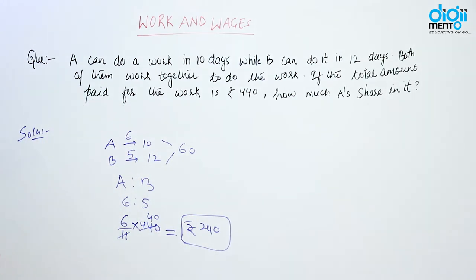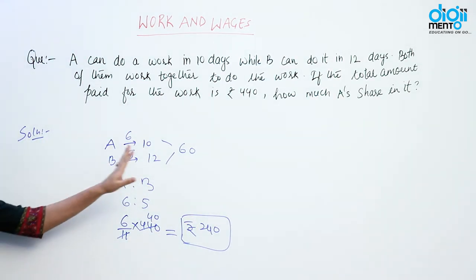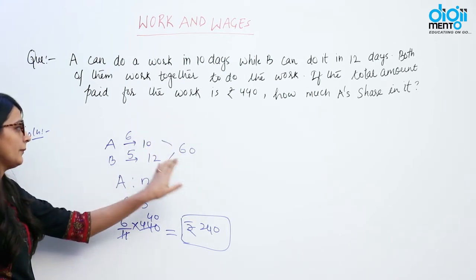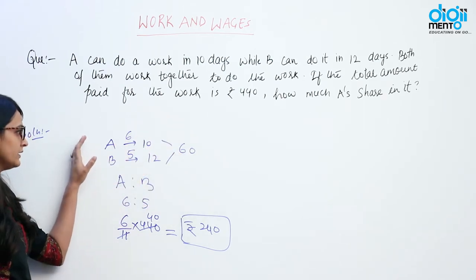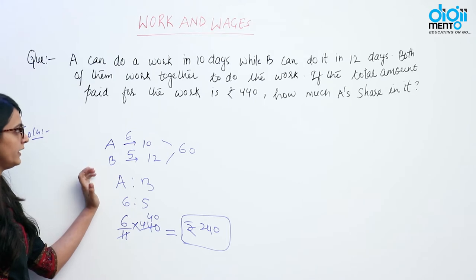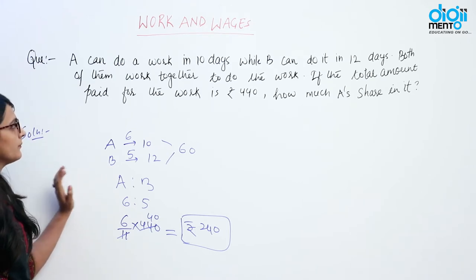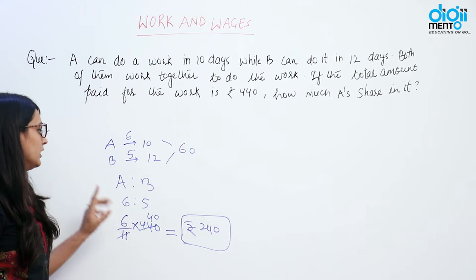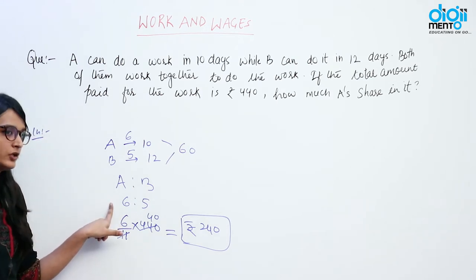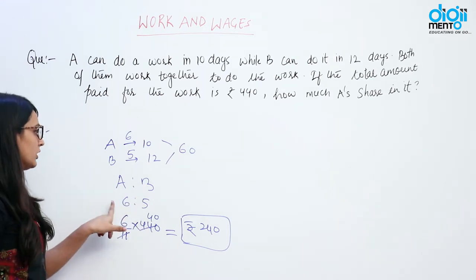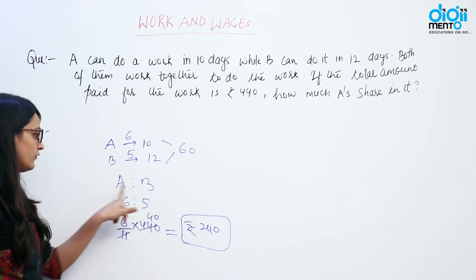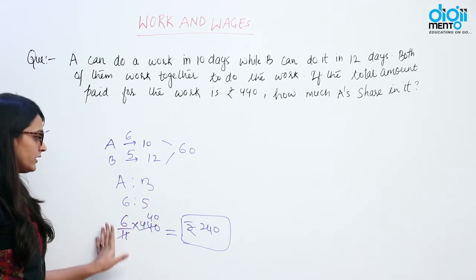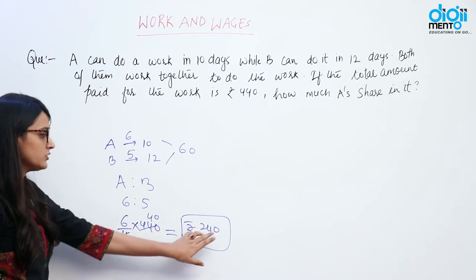To summarize: A can do the work in 10 days, B in 12 days. We found total work as LCM = 60. A's efficiency is 6, B's efficiency is 5. The total combined efficiency is 11. Since both get Rs. 440 together, we divide in ratio 6:5. So A's share is 6/11 × 440 = Rs. 240.